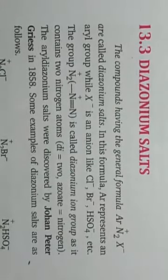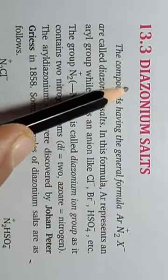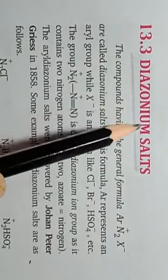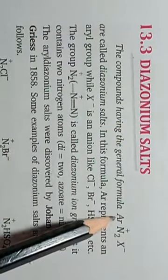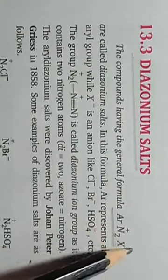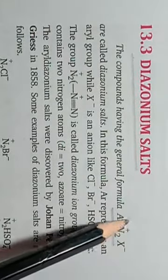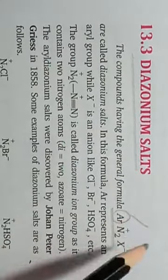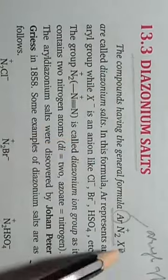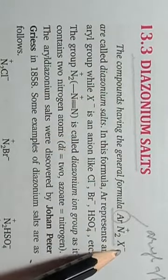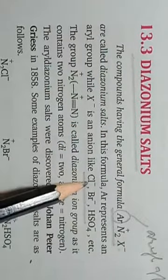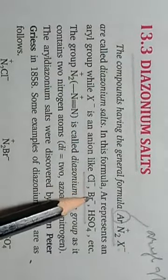Today we will discuss a new topic: diazonium salts. Diazonium salts are organic salts represented as Ar-N₂⁺ X⁻, where Ar represents an aryl group, N₂⁺ is the diazonium ion, and X⁻ can be any monovalent anion like chloride, bromide, or bisulfate ion.